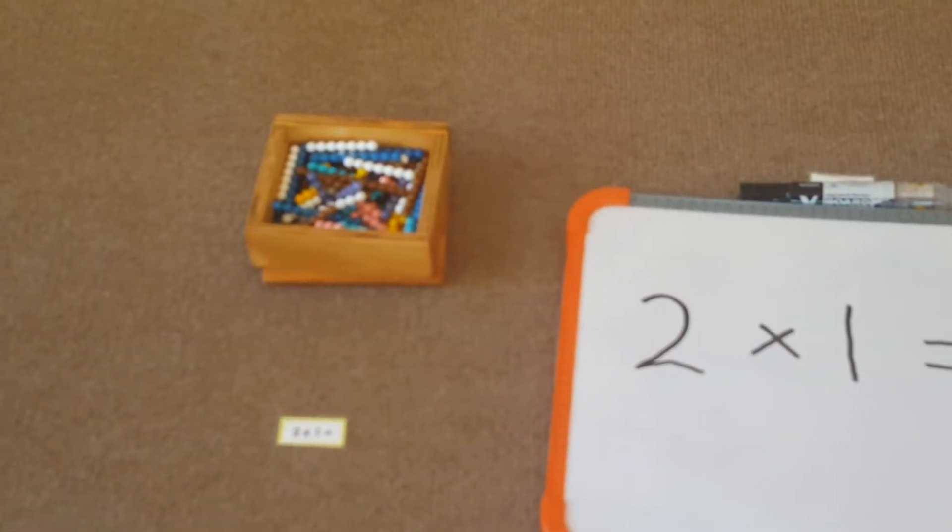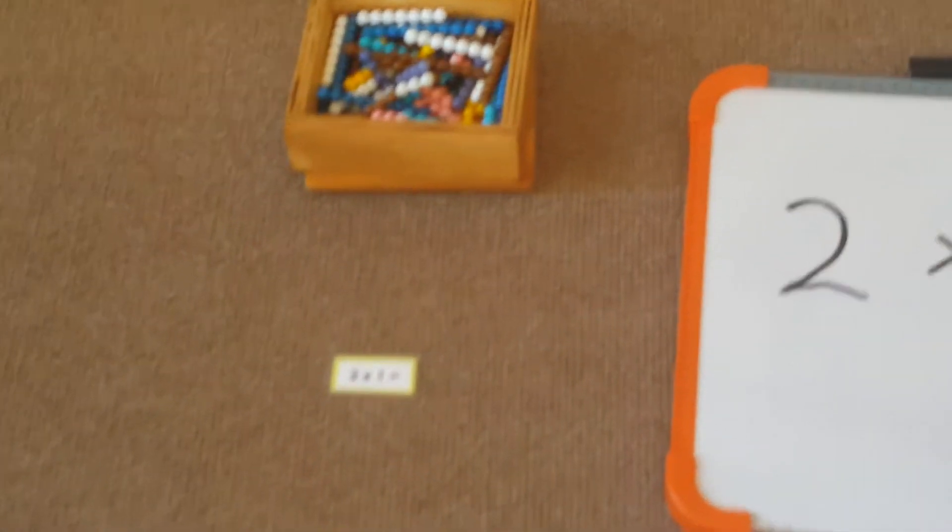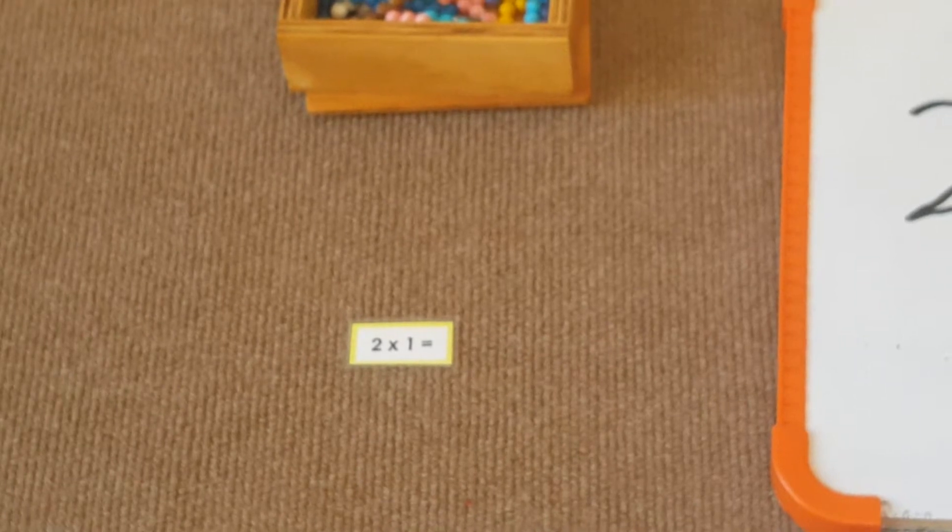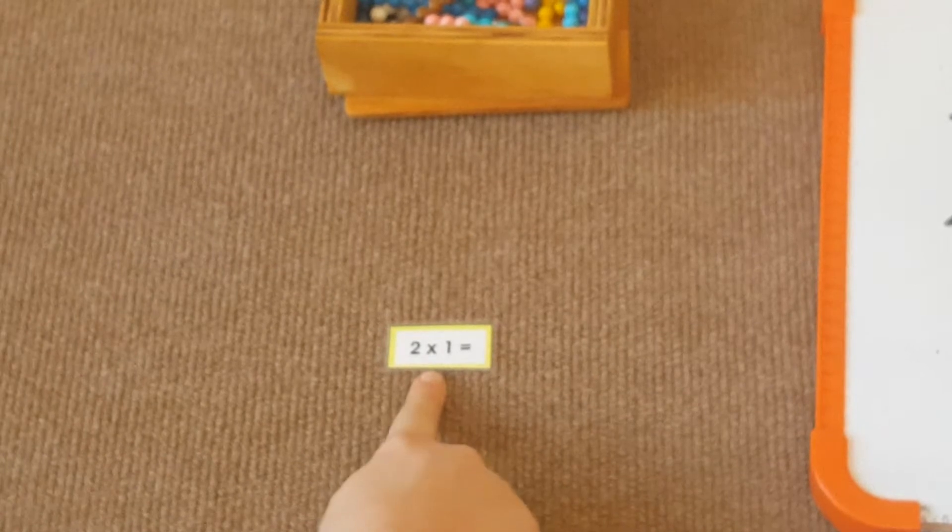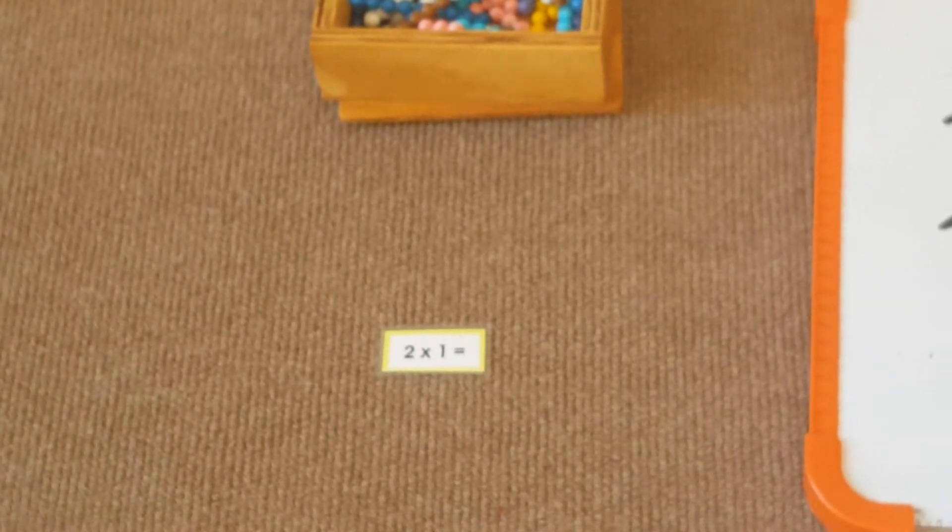The next lesson is multiplication tables with a short bead stair. If we look at this equation, this is the multiplication sign and that means that we take two one time.